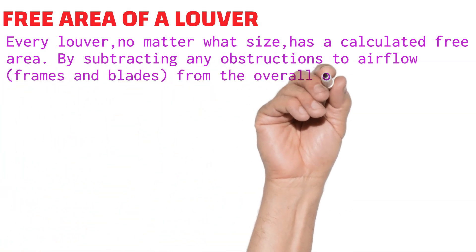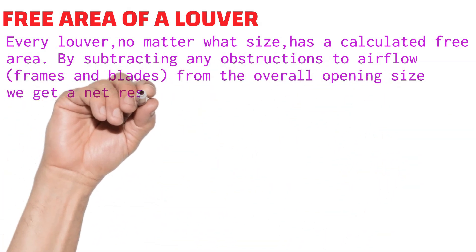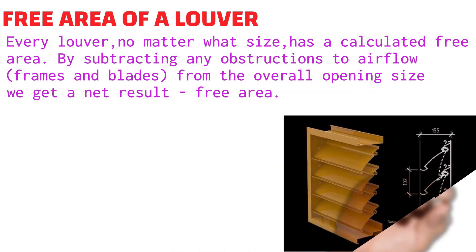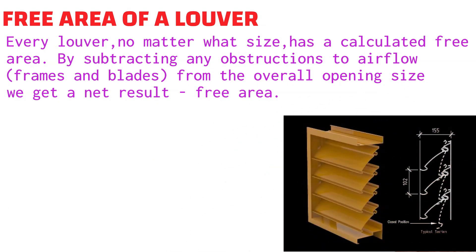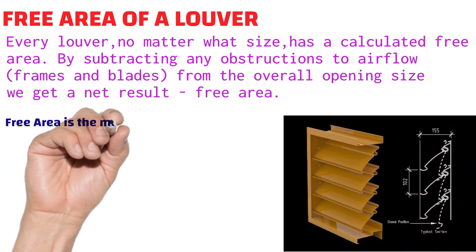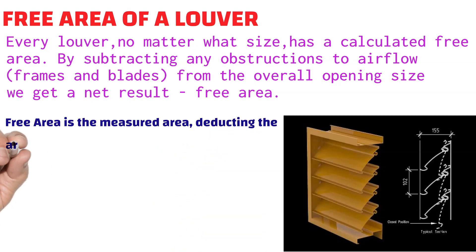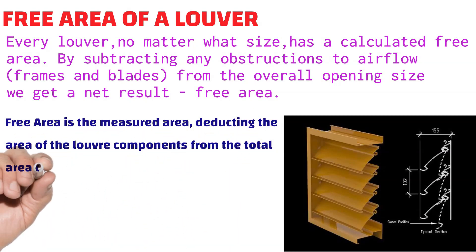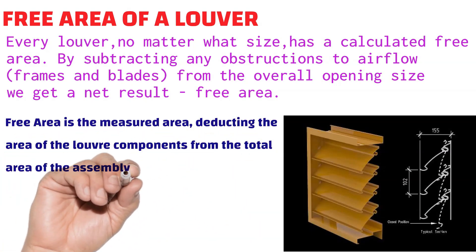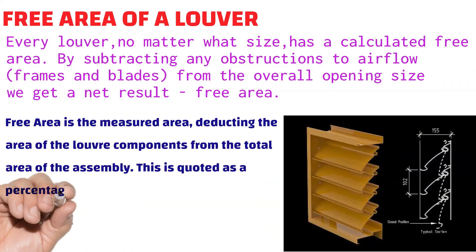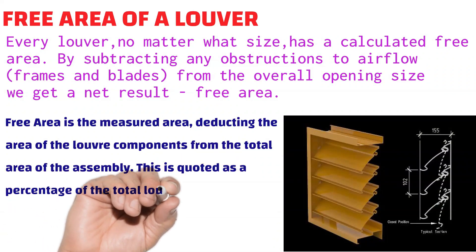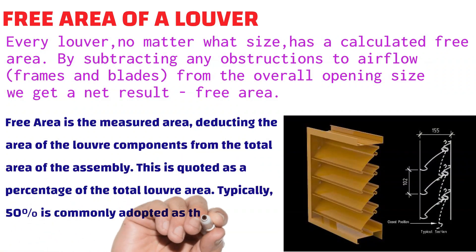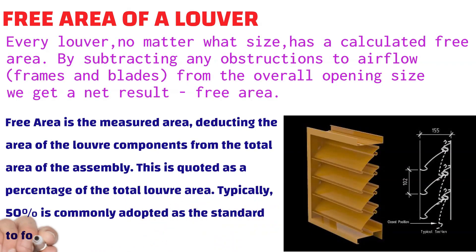The net result area after subtracting obstructions is called the free area. In other words, free area is the measured area after deducting the area of the louver components from the total area of the assembly. This is quoted as a percentage of the total louver area; typically 50% is commonly adopted as the standard.